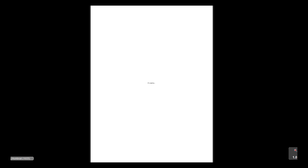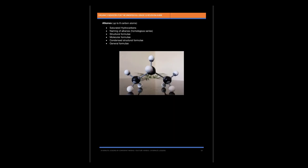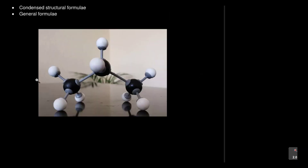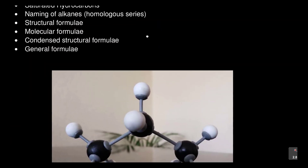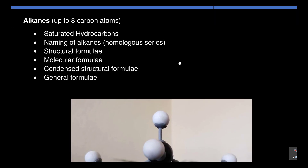We've come to the end of our lesson. In the next lesson, we're going to get into detail on those three hydrocarbons — alkanes, alkenes, and alkynes. In those lessons, we're going to focus on what it means to be saturated, the naming of these compounds which is the homologous series, the structural formulas, the molecular formulas, the condensed structure, and the general formula. Join me again in the next lesson.